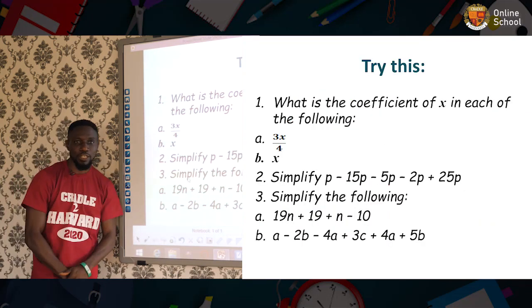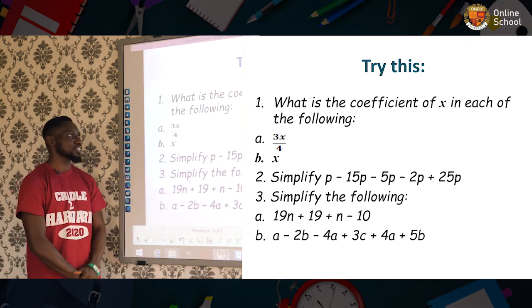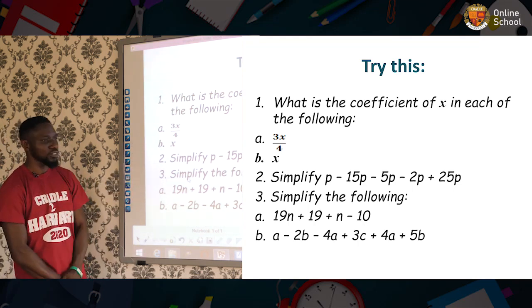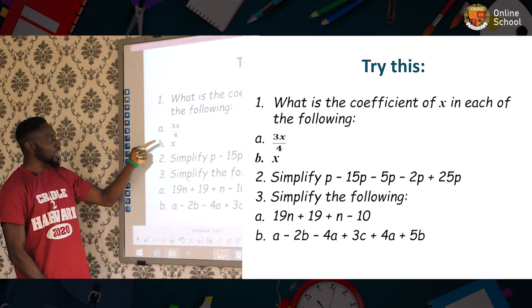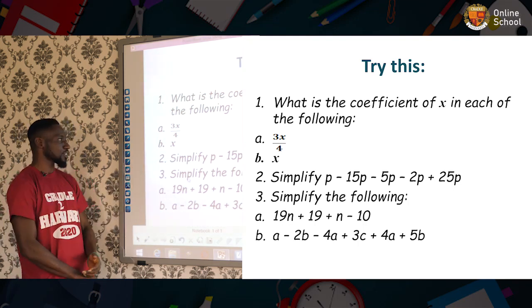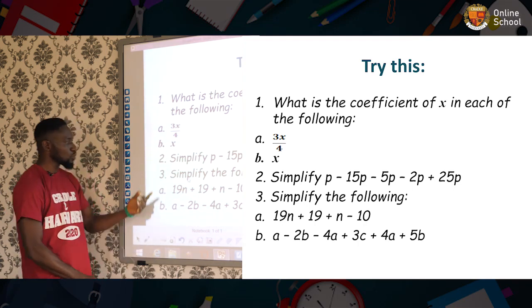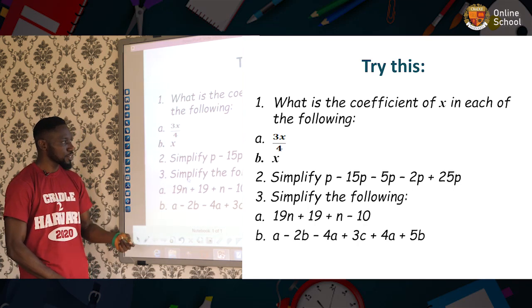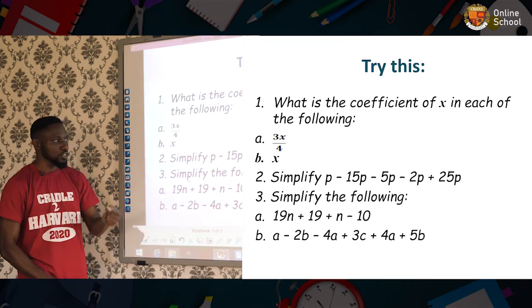I want you to try this. Having learned what we have learned today, I would like you to try this at home. The first question says, what is the coefficient of x in each of the following? Don't forget what we learned in fraction. Say 3x over 4. What is the coefficient of x? B says x. What's the coefficient of x? Number two says, simplify p - 15p - 5p - 2p + 25p.